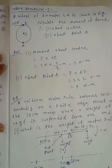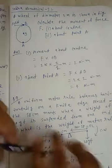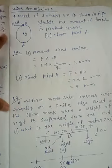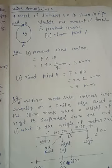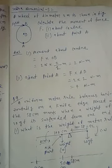Now, another question. A wheel of diameter 2 meters is shown in the figure. Calculate the moment of force about center O and about point A. Now, move to the answer.